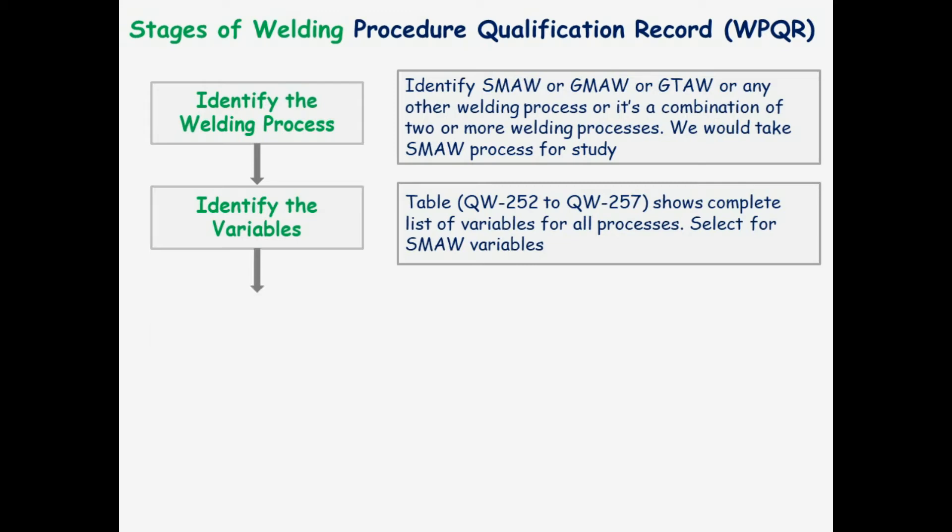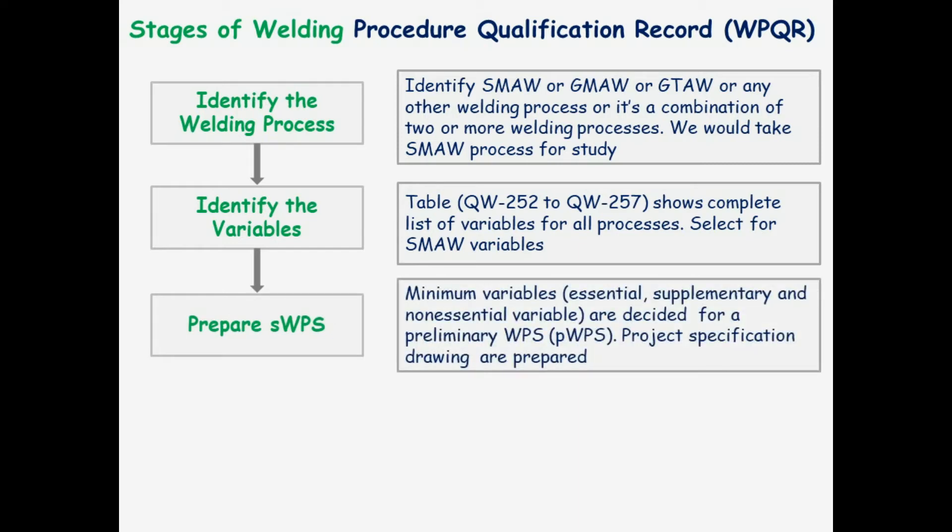Now prepare the SWPS. The minimum variables — which are essential, supplementary, and non-essential variables — are decided for a preliminary WPS. Project specification drawings are also prepared at this stage.